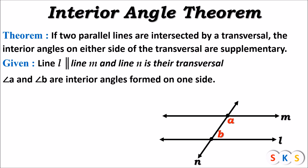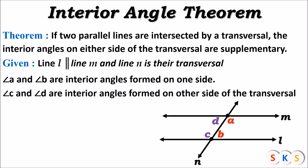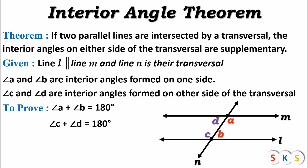Angle A and angle B are interior angles formed on one side of a transversal. Angle D and angle C is another pair of interior angles formed on the other side of the transversal. That is the given. What I have to prove: angle A plus angle B equals 180 degrees — supplementary means the sum of two angles is 180 degrees. The first pair is angle A and angle B, and I have to prove angle A plus angle B equals 180 degrees.